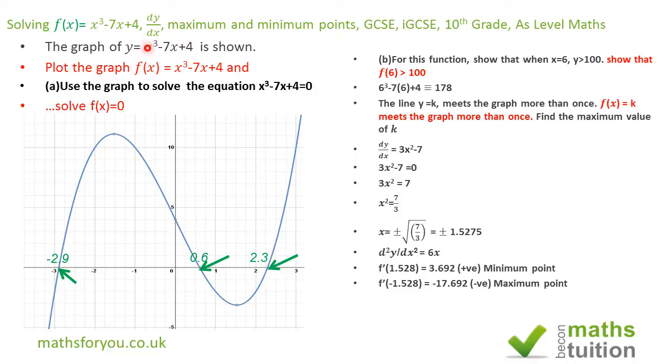That gives you the value of k and that's k is equal to minus 1.5275 cubed minus 7 times minus 1.5275 plus 4 and we get 11.12. So that value there, the k value or the y value, that line for y is equal to k will be y is equal to 11.12.